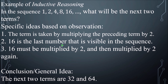Let's have an example. In the sequence 1, 2, 4, 8, 16, and so on, what will be the next two terms? Let's gather specific ideas based on observation. The term is taken by multiplying the preceding term by 2. So 2 is taken from 1 times 2, 4 is taken from 2 times 2, 8 is taken from 4 times 2, 16 is 8 times 2, and so on. That's the first observation.